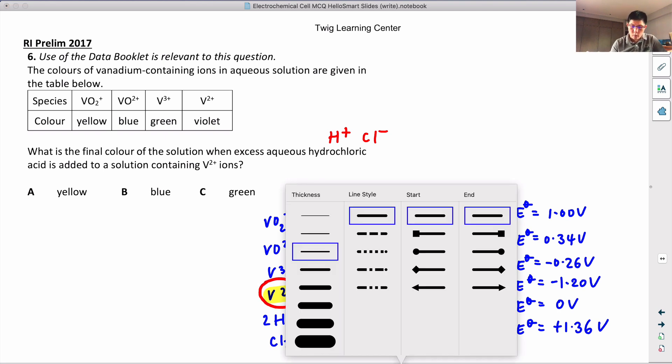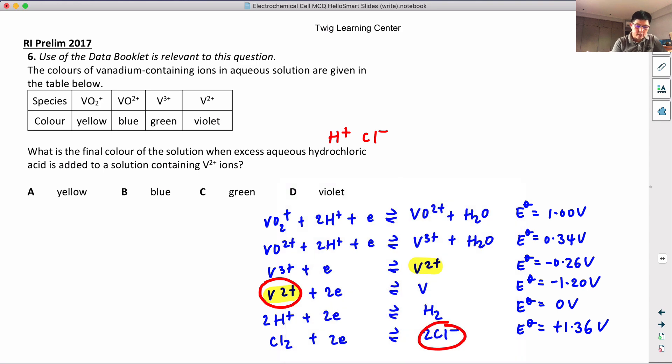So what is my E-cell then? My E-cell will be, this will be my cathode, and this will be my anode.